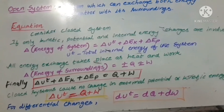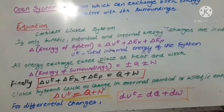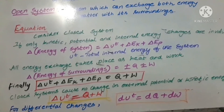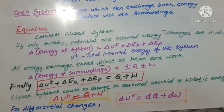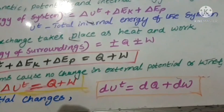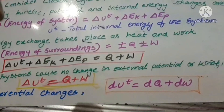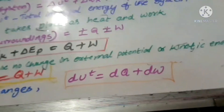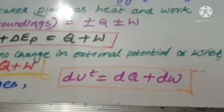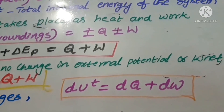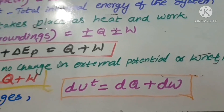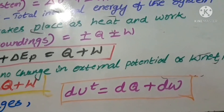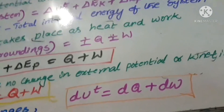This is the final equation: whenever we need the equation for the first law of thermodynamics, we write delta Ut equals Q plus W for finite changes in internal energy. For differential changes, the equation becomes dU equals dQ plus dW. This is the first law of thermodynamics equation for differential changes. The signs can be changed based on the direction of transfer of heat and work between system and surroundings.